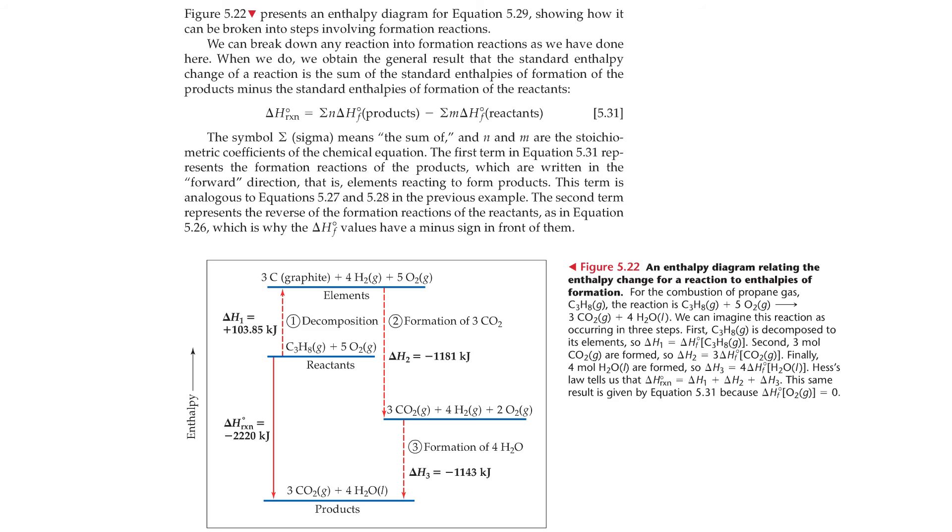Figure 5.22 presents an enthalpy diagram for equation 5.29 showing how it can be broken into steps involving formation reactions. We can break down any reaction into formation reactions, as we have done here. When we do, we obtain the general result that the standard enthalpy change of a reaction is the sum of the standard enthalpies of formation of the products minus the standard enthalpies of formation of the reactants.